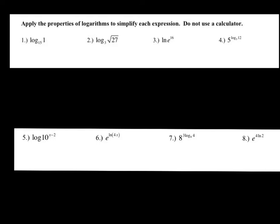Let's simplify some of these. For your first one: anytime your argument is one — the big part is one — your base is 15, so 15 to what power equals one? Anything to the zero power equals one, and that's where our property comes in — it's going to be zero. That first expression equals zero.